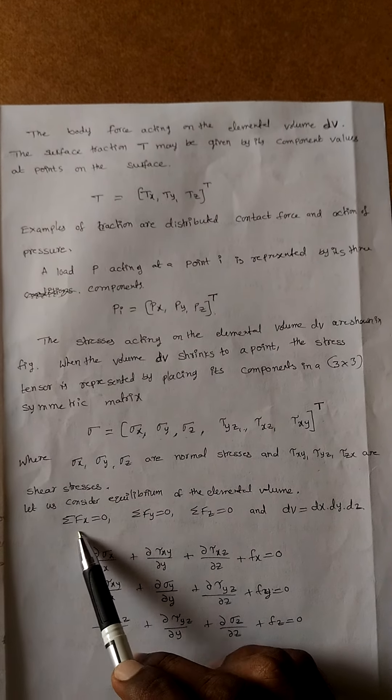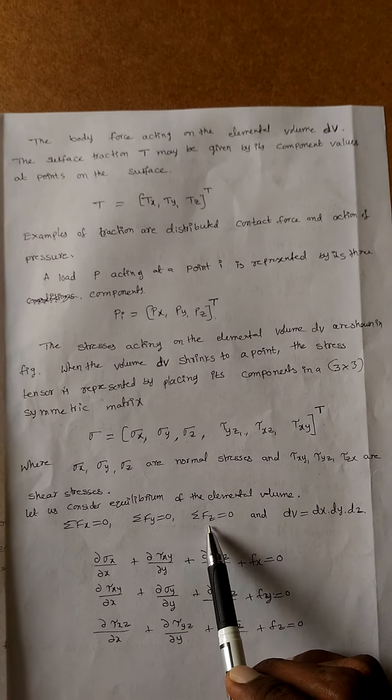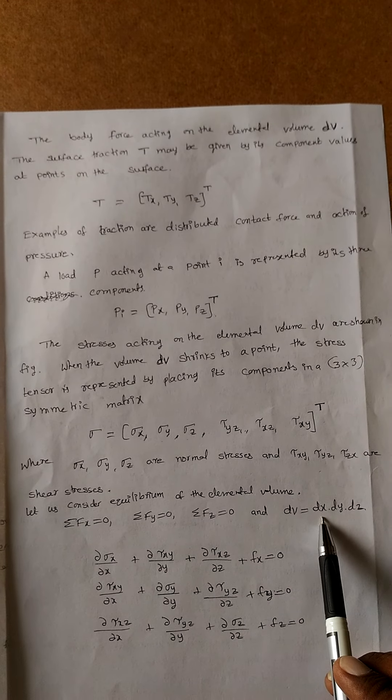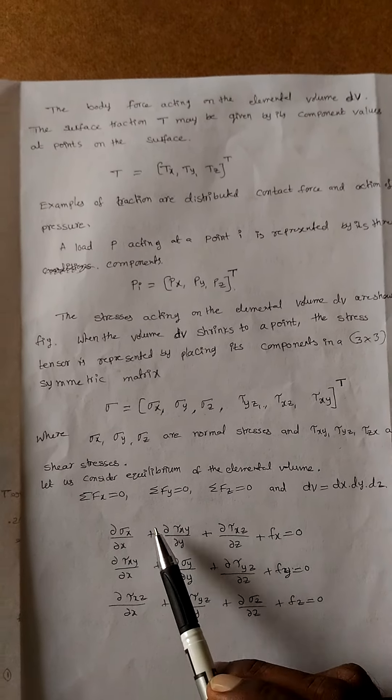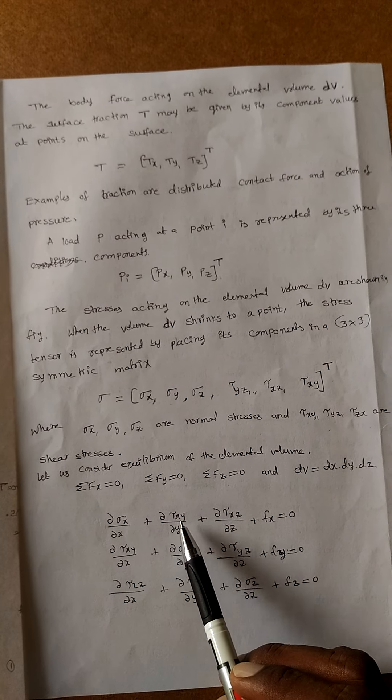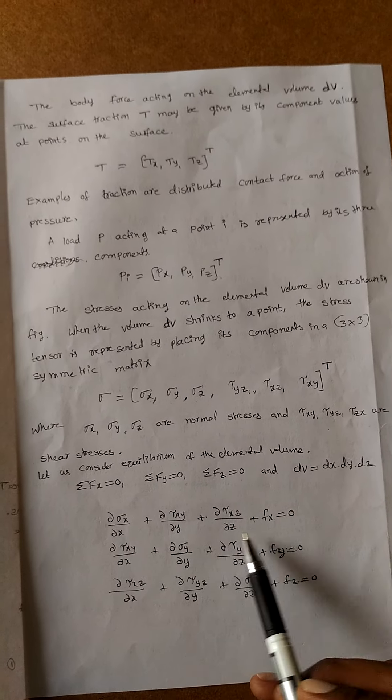Σf_x = 0, Σf_y = 0, Σf_z = 0, where dv = dx·dy·dz. This can be written as: ∂σ_x/∂x + ∂τ_xy/∂y + ∂τ_xz/∂z + f_x = 0.